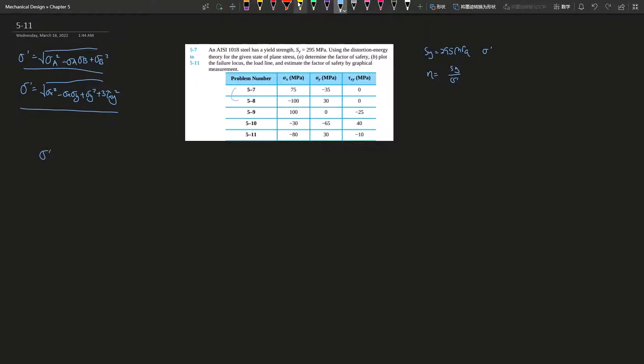For this one, 5-11, this would just be: negative 80 squared minus negative 80 times 30, plus 30 squared, plus three times negative 10 squared. Then square root of the whole thing. You will get 100 megapascals out of this one.